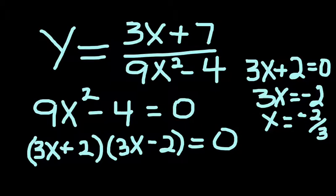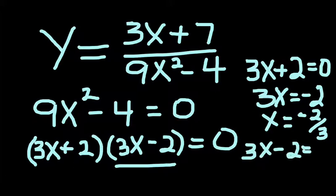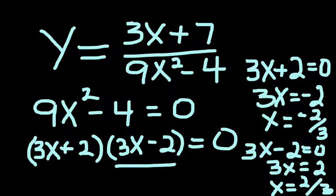But we have a second vertical asymptote, the second factor. So we set it equal to zero also, 3x minus 2 equals zero. Solve it, 3x, move the 2 over is equal to 2, and x then when we divide by 3 is equal to positive 2 thirds. Therefore, we have two vertical asymptotes in this problem. We have a vertical asymptote that occurs at x equals 2 thirds, and we have a vertical asymptote that occurs at x equals negative 2 thirds. So there are actually two vertical asymptotes in this problem because of the quadratic in the denominator.